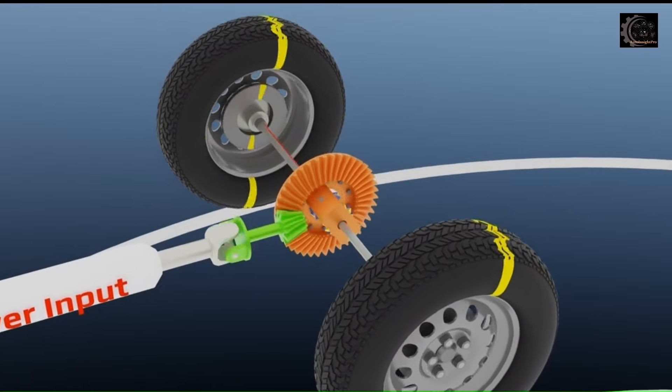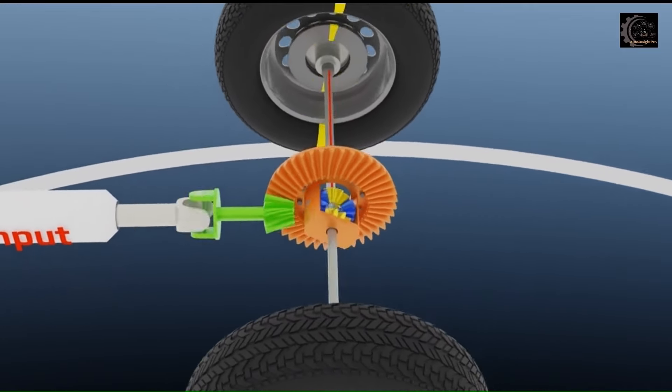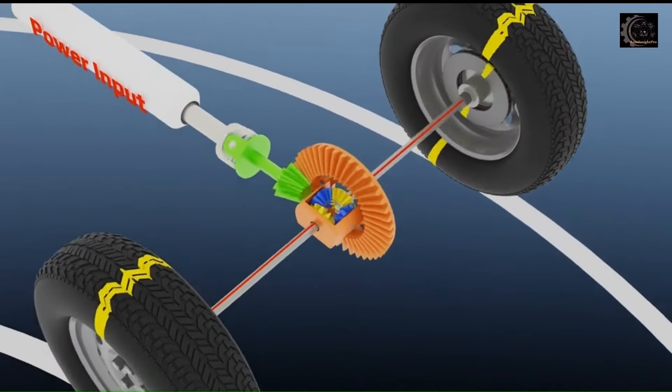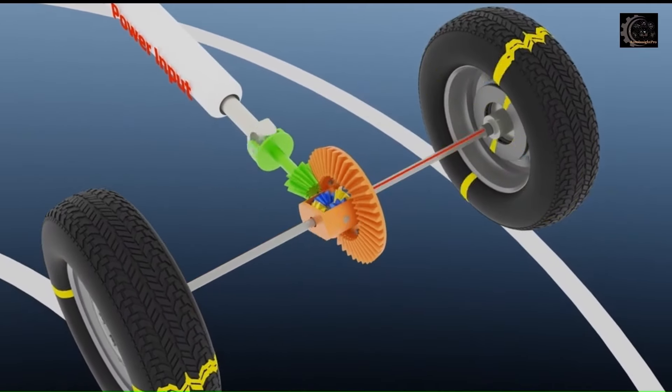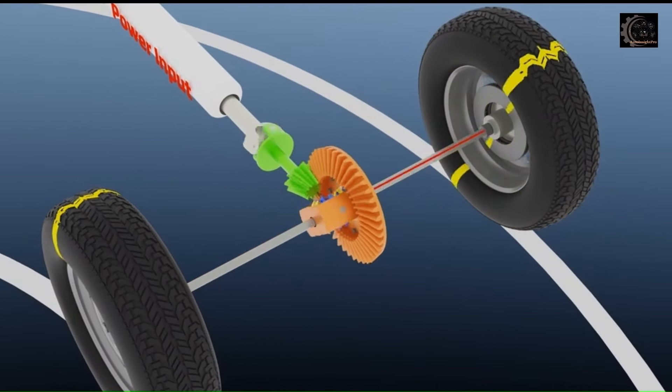But during making a turn, outside wheel has to cover more distance than inner side wheel. That means outer side wheel has to rotate faster to make smooth turn. This differential unit makes it possible.